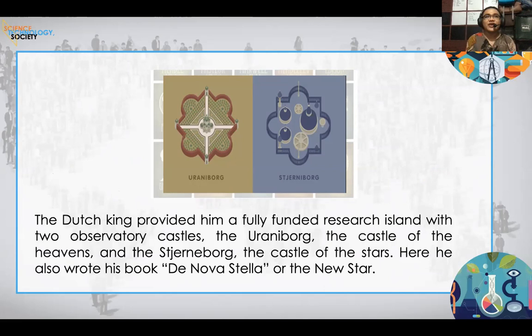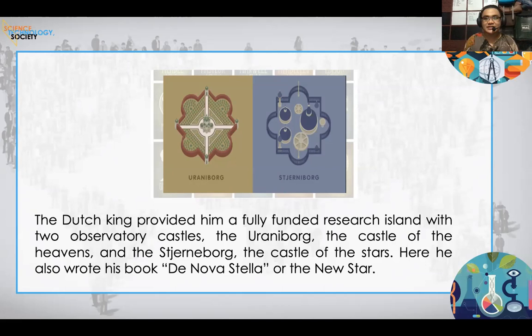However, those castles were taken from him after the Dutch King died. When the king who funded his research island passed away, his 19-year-old son took over, who preferred spending on other things rather than supporting the research facility. After losing that support, Tycho Brahe had to travel and work with other scientists. This shows how important government support is for scientific advancement and research.